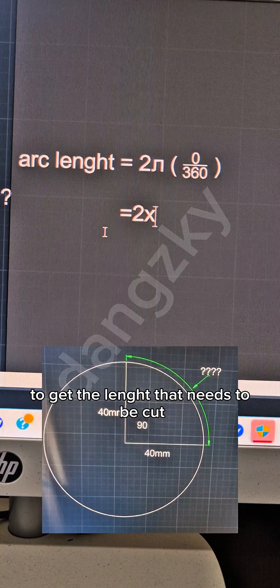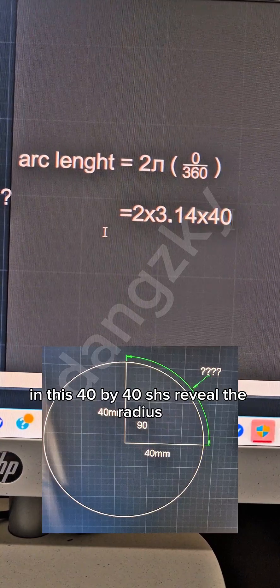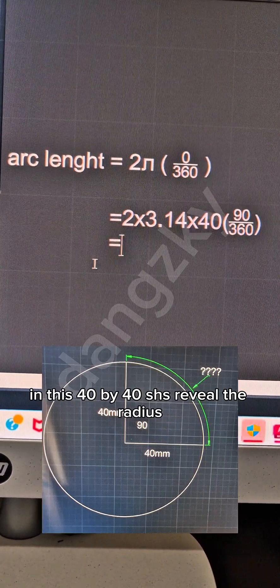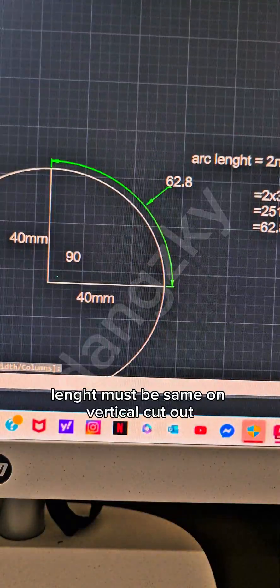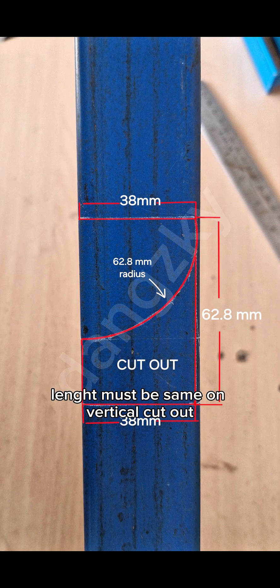To get the length that needs to be cut in this 40 by 40 SHS, reveal the radius and calculate. Radius length must be same on vertical cutout.